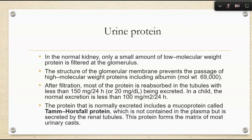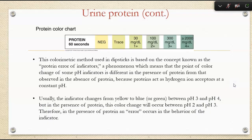We typically see less than 150 milligrams per 24 hours being excreted in adults, and less than 100 in children. The normal protein we see is called Tamm-Horsfall protein — it's not contained in plasma but is secreted by the renal tubules, and it forms the matrix of most urinary casts, which I'll explain in the next chapter.